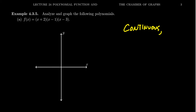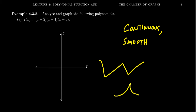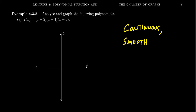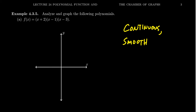Another thing that's true about polynomial graphs is that they are smooth — there are no sharp corners or cusps of any kind. If you touch the polynomial, you aren't going to poke your finger. As you draw your polynomials, make sure that the turns are rounded, not sharp zigzaggy things. That's not acceptable when graphing a polynomial.